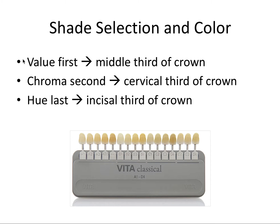So let's put it all together for shade selection. You want to look for value first, as it's the most important feature of shade matching, and it's typically found in the middle third of a crown. You'd pick chroma second, which is typically concentrated in the cervical third of the crown. And you focus on hue last — that's actually the least important characteristic and is mostly concentrated in the incisal third. The most important thing is the order: value, then chroma, then hue, from most important to least important.